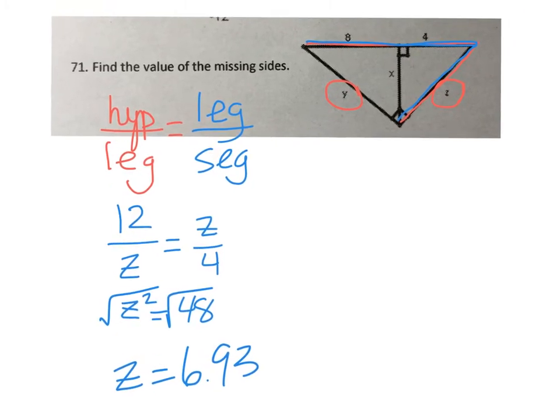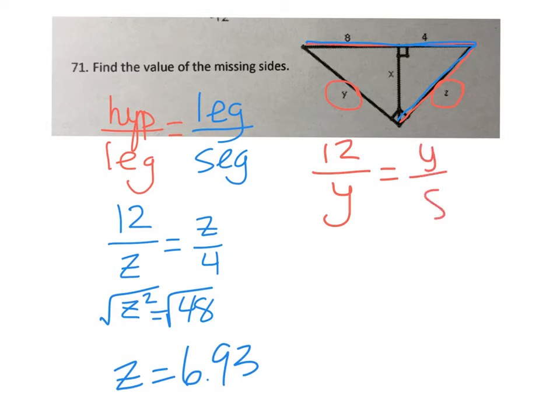We're going to do a very similar thing to find y. The whole entire hypotenuse is 12 again over y. y is in proportion to y over 8, because now 8 is the segment closest to y. Cross multiply: y squared equals 96.